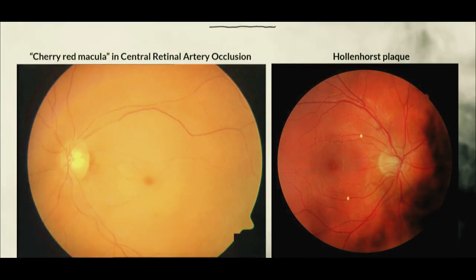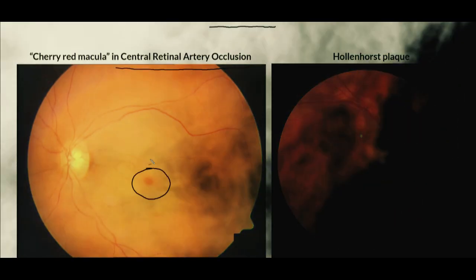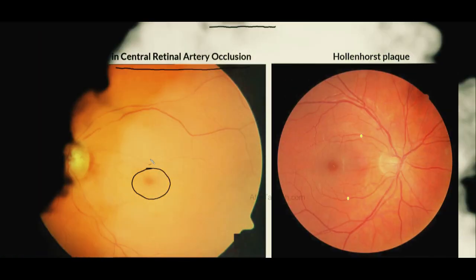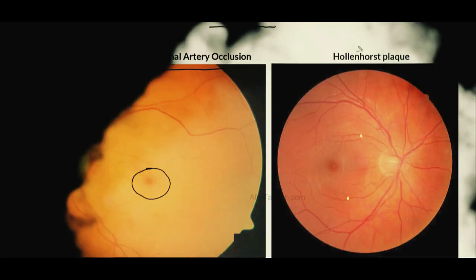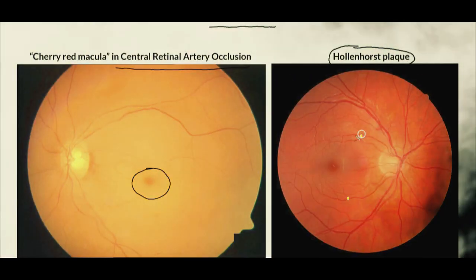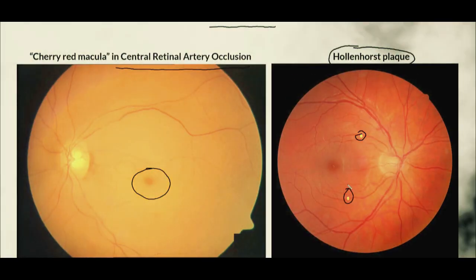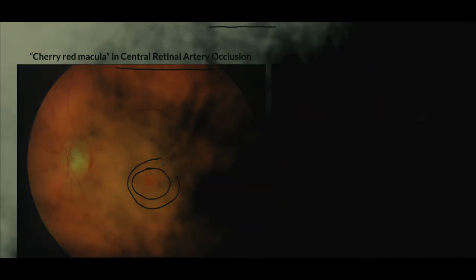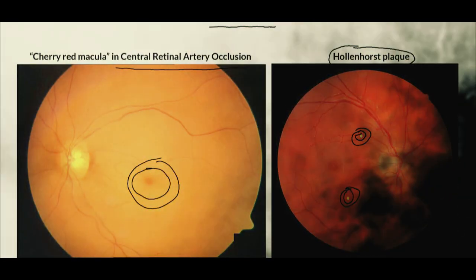There are some classic findings that you may see on fundoscopy when these emboli ultimately travel to the brain in a patient with carotid artery stenosis. These include, in patients who develop central retinal artery occlusions, a classically seen cherry red macula. Another finding is what are known as Hollenhorst plaques, which can be appreciated in the fundoscopic image on the right — tiny plaques visible in the retinal vessels. Both the cherry red macula and Hollenhorst plaques are especially high yield for examinations.